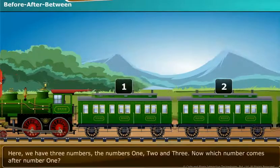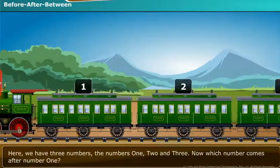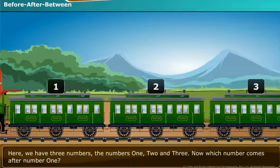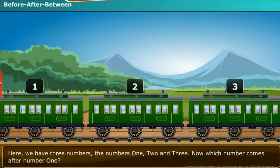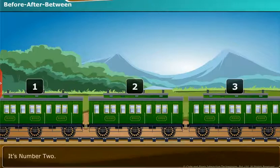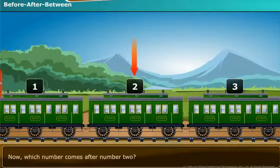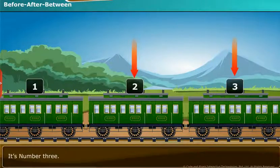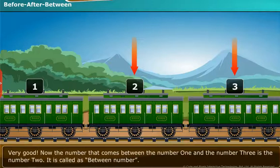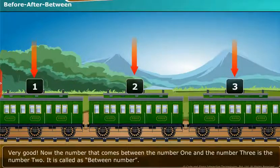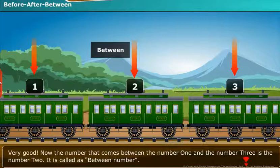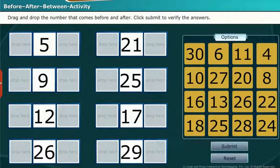Here, we have three numbers: 1, 2, and 3. Which number comes after number 1? It is number 2. Which number comes after number 2? It is number 3. Very good. The number that comes between the number 1 and the number 3 is the number 2. It is called the between number. Let us do the following activity.